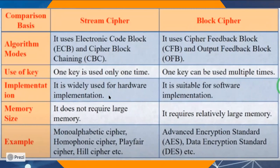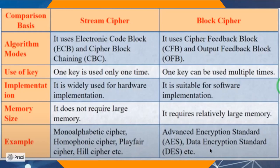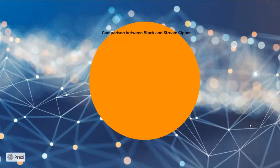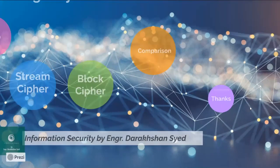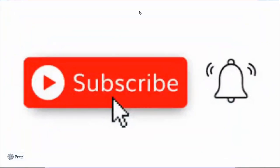Stream cipher is widely used in hardware implementations, while block cipher is used for software applications. For memory size, stream cipher doesn't require much memory because you transfer bit by bit, whereas block cipher transfers block by block so it has a higher memory requirement. Examples of stream ciphers include monoalphabetic cipher, Playfair cipher, and hill cipher. Examples of block ciphers include Advanced Encryption Standard (AES) and Data Encryption Standard (DES). This is the end of this particular discussion on processing ways. I hope it is clear — thank you so much for your time.